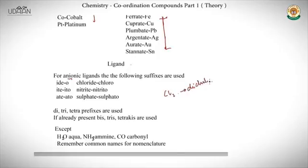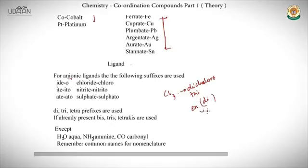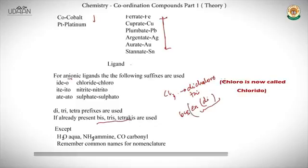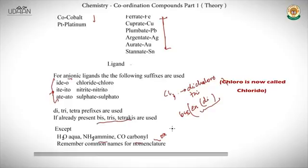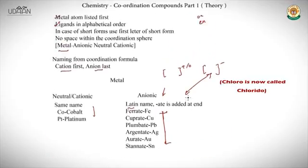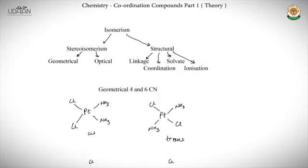The prefixes di-, tri-, tetra- are used for multiple ligands. For instance, two Cl ligands are written as dichloro, three as trichloro, and so on. If the ligand name already contains di or tri (like ethylene diamine tetraacetate), we use bis-, tris-, or tetrakis- instead. Common names such as oxo and oxalate, as listed in your NCERT textbook, are important to remember for nomenclature.